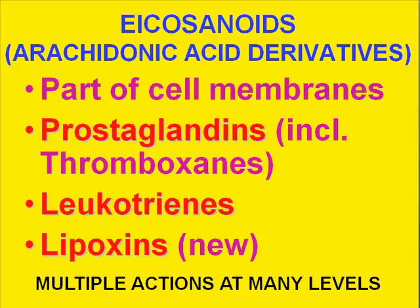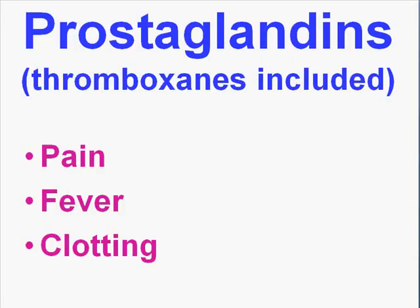To summarize briefly: prostaglandins produce pain, fever, and clotting. An easy way to remember this is that their effects are counteracted by aspirin — aspirin reduces pain, reduces fever, and reduces clotting. That covers the key roles of prostaglandins in acute inflammation.